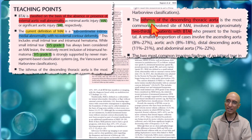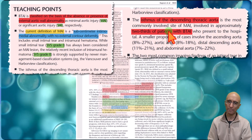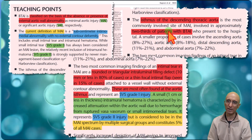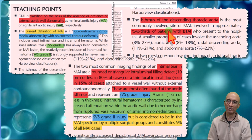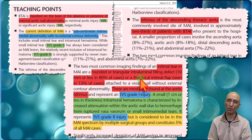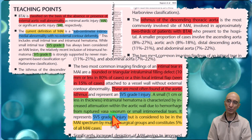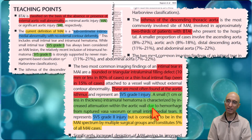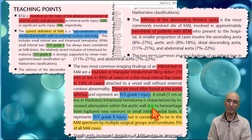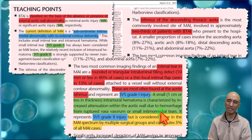The lesion is commonly seen in the isthmus of the descending thoracic aorta. SVS grade 1 injuries are characterized by round or triangular intraluminal filling defects less than a centimeter, or a focal thin intimal flap. SVS grade 2 injuries are characterized by small intramural hematoma, likely related to ruptured vasa vasorum, or small intimo-medial tears.